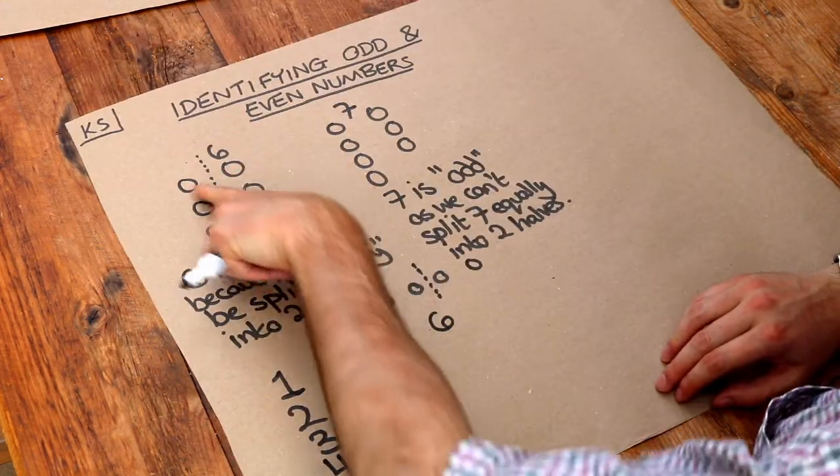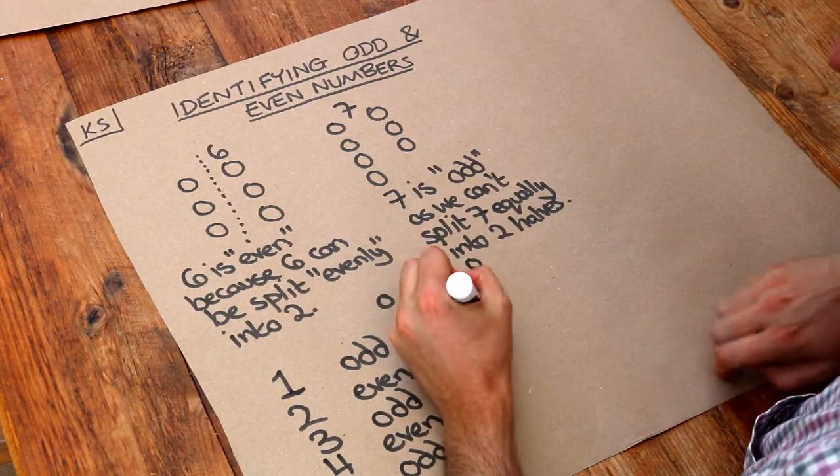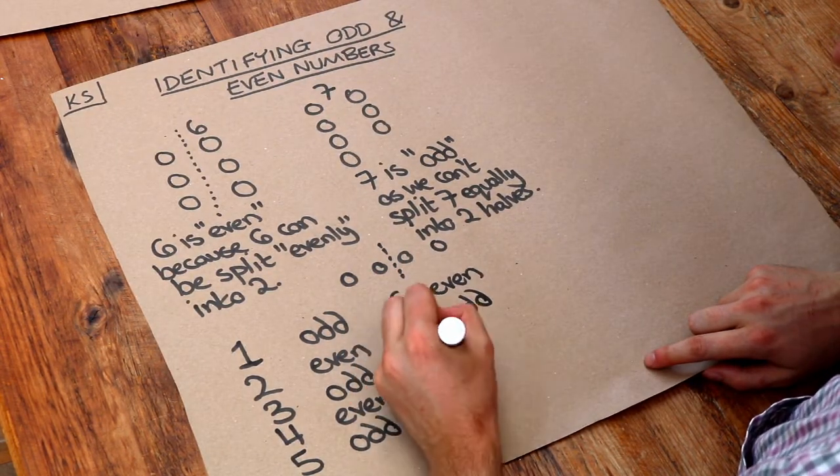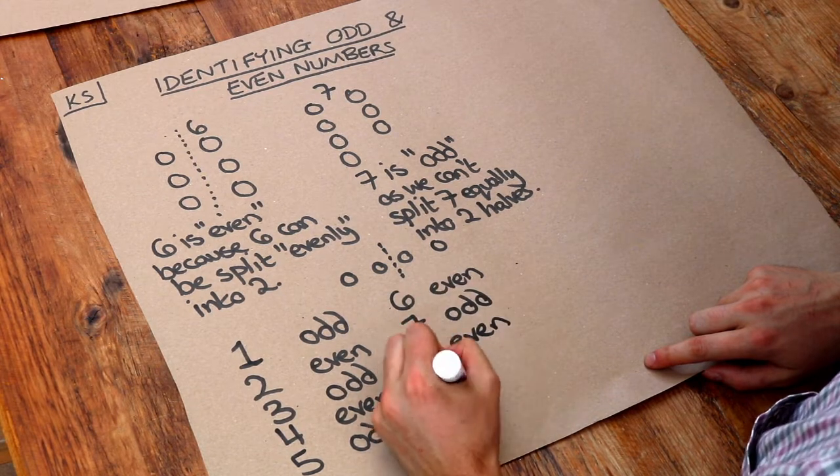So six, we've already seen, is even. Because it can be split into two. Seven is odd. Eight is even. Seven and nine is odd.